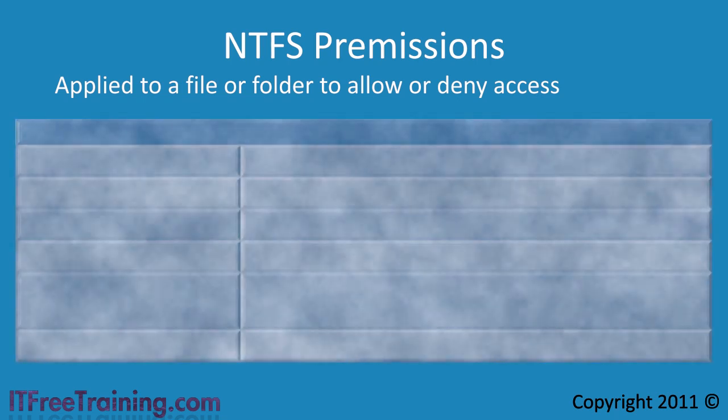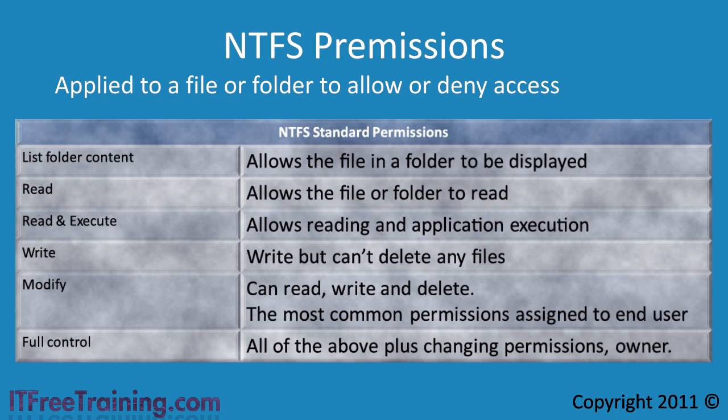There are 5 standard permissions for NTFS. First you have List Folder Content. This is only applied at the folder level. If the user has this level of access, they can view the contents of a folder to see what files and folders are in that folder. This does not give them access to read or write anything in the folder but does allow them to see what files are present.